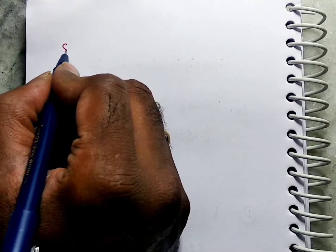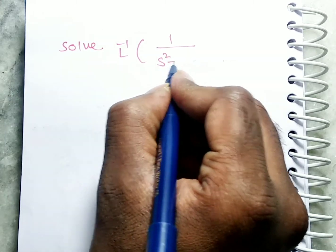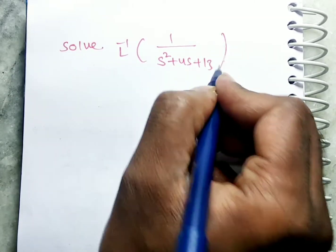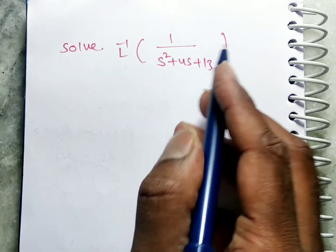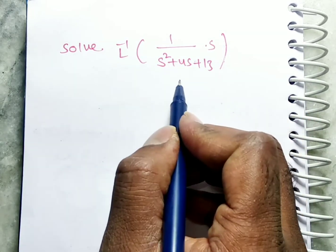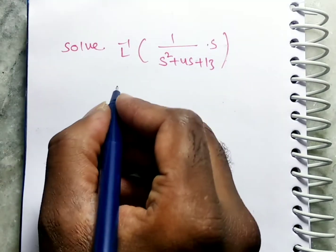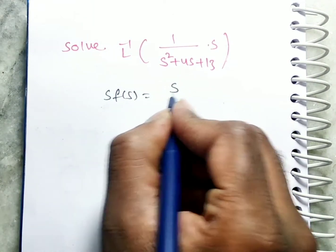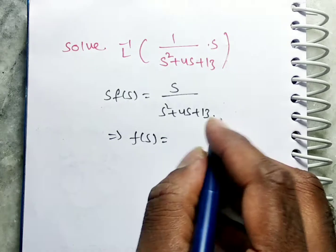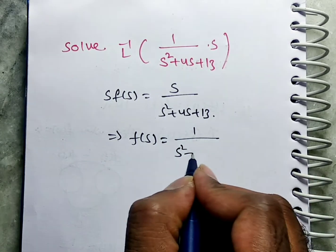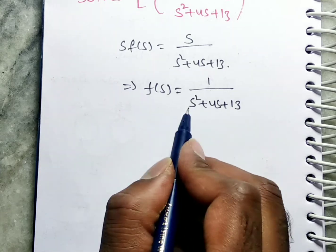Next problem: solve L inverse of S/(S²+4S+13). This is in the form S·F(S), where F(S) equals 1/(S²+4S+13). Now we have to find L inverse of F(S). It is not directly in a standard form because there is a 4S term. So you need to complete the square — go to the (S+A)² form by comparing with S²+2AS.